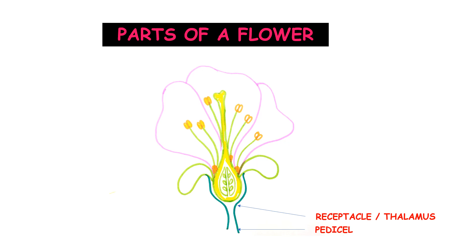It is on the thalamus or receptacle that the floral parts are born. The flower has four whorls. The first whorl is known as the calyx, which consists of green leaf-like structures called sepals, forming the outermost whorl. The sepals basically protect the flower in the bud condition.